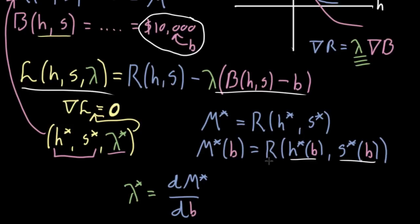The maximum possible revenue is whatever you get when you plug that solution into your function r. The claim is that lambda* — the lambda value that comes packaged with h* and s* when you set the gradient of the Lagrangian equal to zero — equals the derivative of this maximum value, thought of as a function of b, with respect to b.